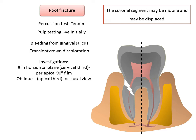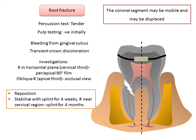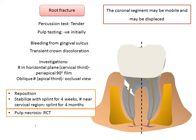Management of root fracture: reposition the tooth and verify position radiographically. Stabilize with a flexible splint for approximately four weeks. If the root fracture is near the cervical area, extend stabilization to about four months. If pulpal necrosis develops, root canal treatment of the coronal segment should be performed up to the fracture line.